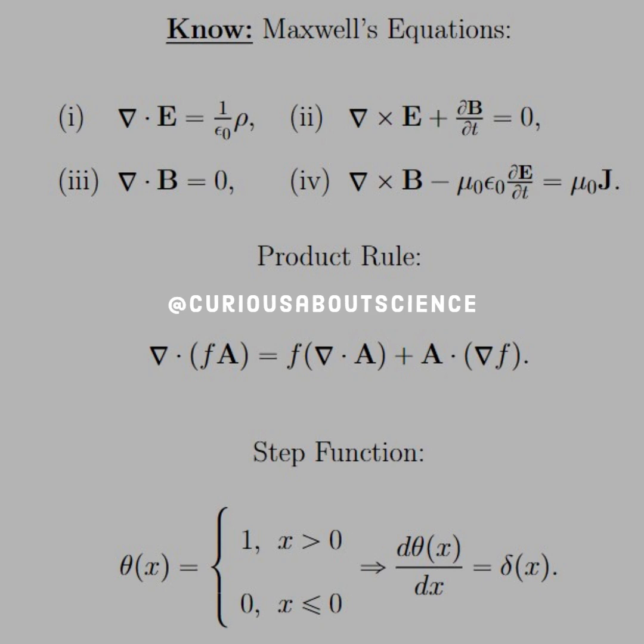Then we have to recall that we have a product rule here that we're going to have to invoke. A is some vector, not the magnetic vector potential. And then the step function tells us that we have one for x greater than zero, and zero for x less than zero. But we also proved back in chapter one that the derivative of this step function was equal to the Dirac delta. We'll see how that becomes handy really quickly.